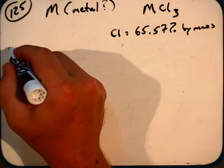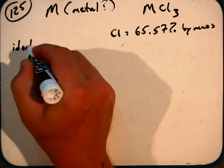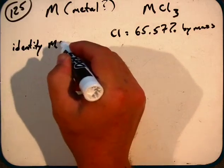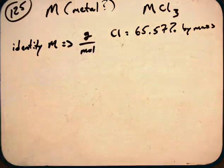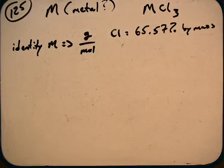We can figure out the identity of M if we knew its atomic mass. So if we could figure out the grams per mole of M, then we could use the periodic table to determine what M is.